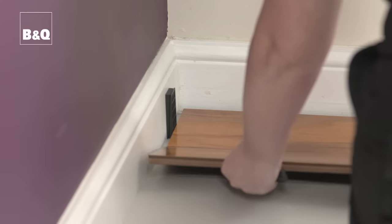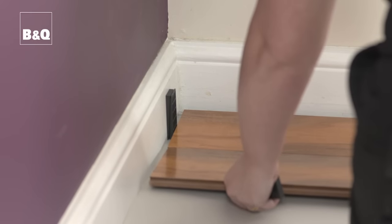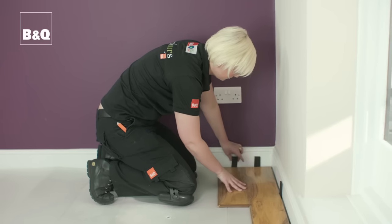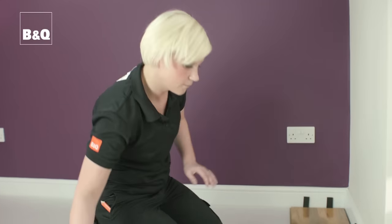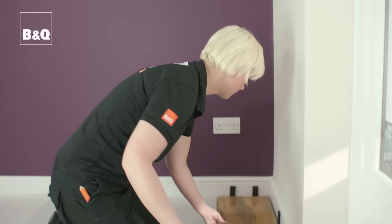To start the next row, angle the cut board against the first board, with the cut end by the wall. Then add your expansion spacer. Press forward and down to lock into place. Then just repeat this along the whole row.